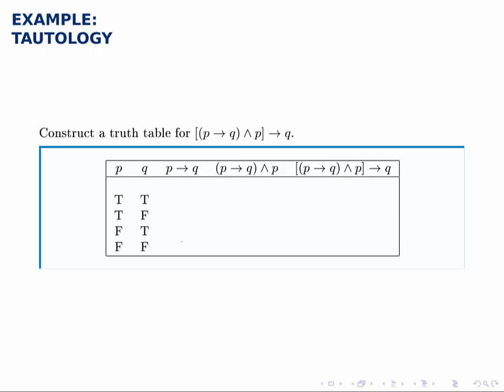To do the implication column, P implies Q. Again, this is true unless P is true and Q is false. So it's true everywhere except for the second row.